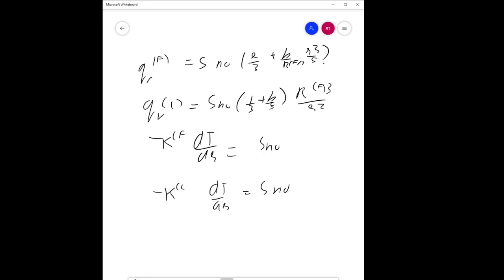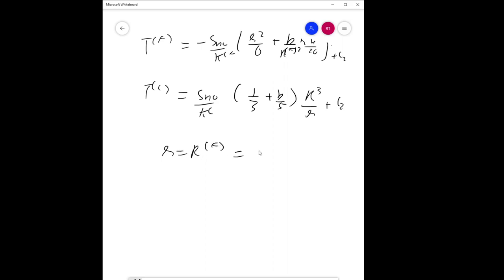You get K_F = -S_n0(R^2/6 + BR_F^2 R^4/20) + C_2, and T_C = S_n0 K_C(1/3 + KR^3) + C_2. You also know that at R_F, T_F equals T_C.